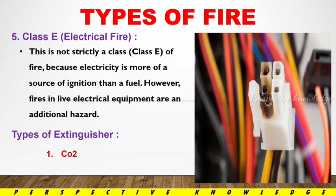The fifth one is Class E — this is called electrical fire. Electrical fire is not strictly a class of fire in the same way, because electricity is more of a source of ignition than a fuel. For electrical fires, a CO2-type extinguisher is used to control and handle the electrical fire.